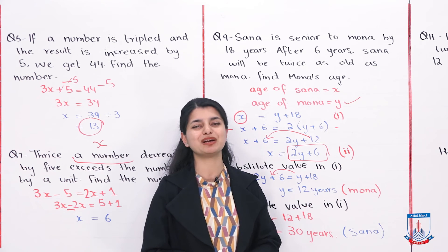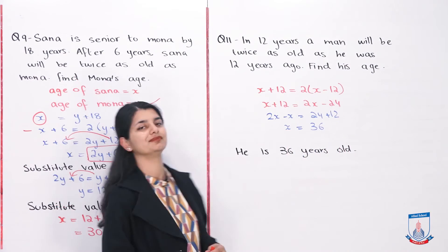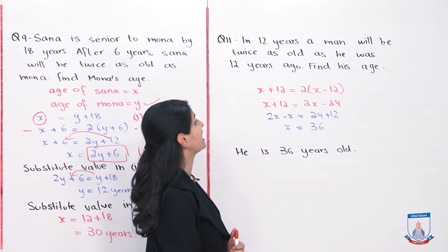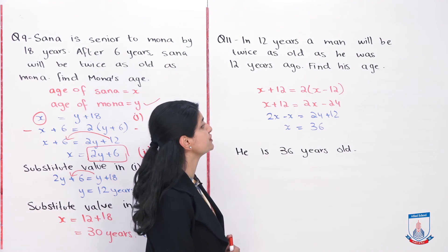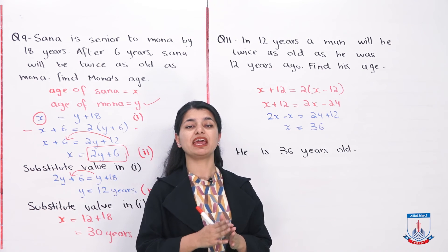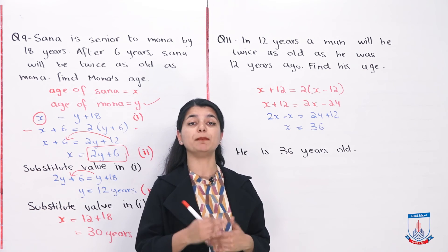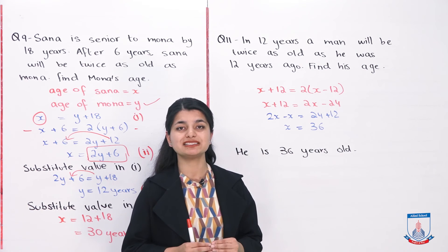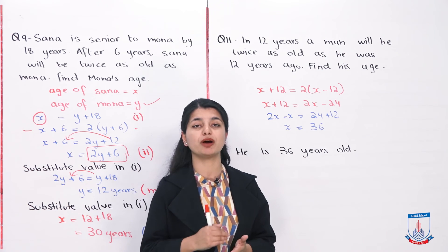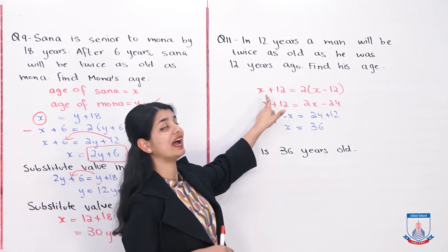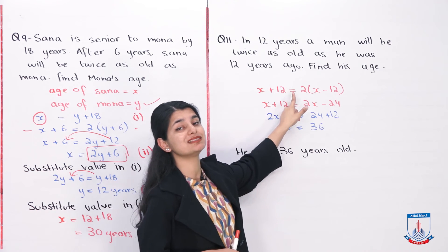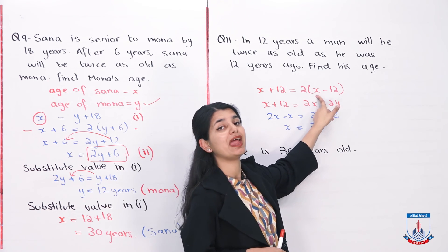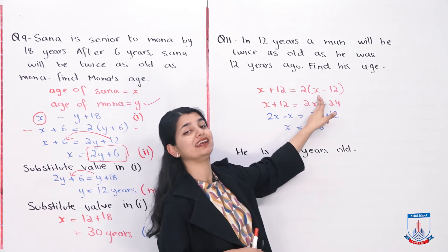Let's look at question number 11: In 12 years, a man will be twice as old as he was 12 years ago. Find his age. We let x be his current age. His age 12 years ago is x minus 12, and his age in 12 years is x plus 12.